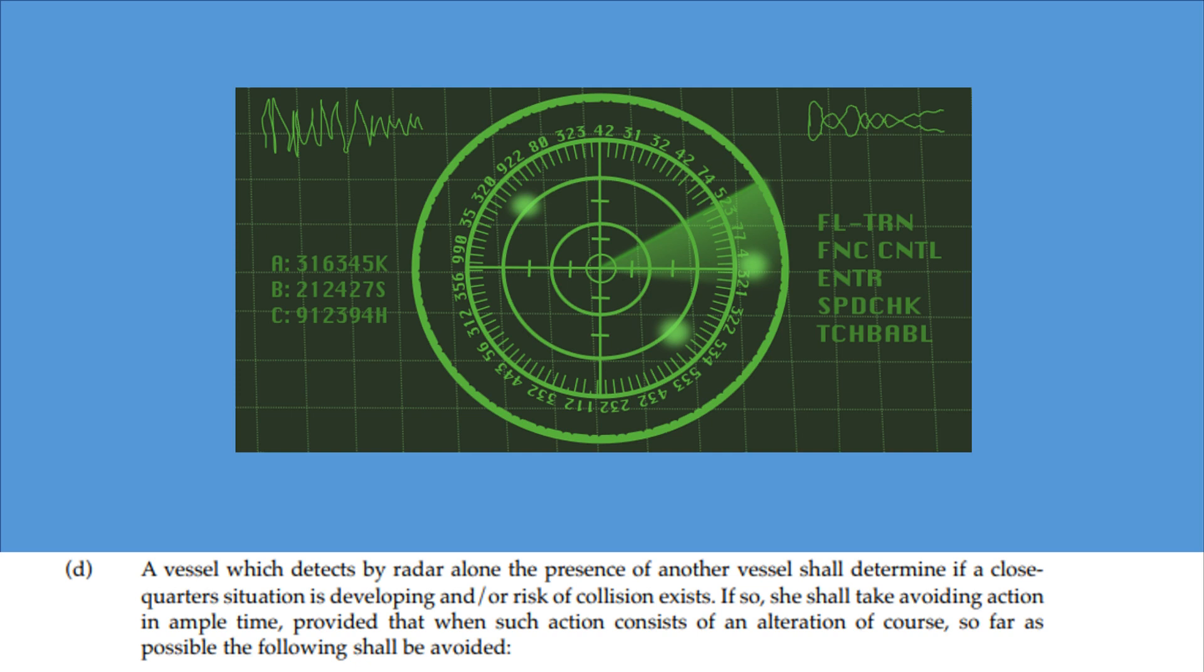A vessel which detects by radar alone the presence of another vessel shall determine if a close quarters situation is developing and or risk of collision exists. If so, she shall take avoiding action in ample time provided that when such action consists of an alteration of course, so far as possible, the following shall be avoided. Before we look at what action to avoid then, let's just pay attention to some of the wording. This part of the rule, part D, applies to vessels which detect by radar alone the presence of another vessel. So this is only with operational radar, not by sight or hearing or any other method.